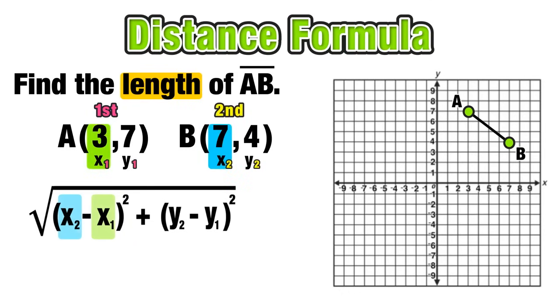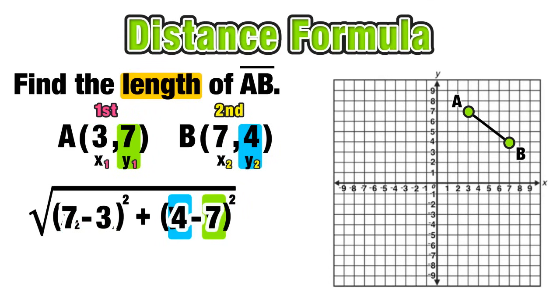Let's start off by looking at x1 and x2. x2 is 7, x1 is 3, so we have 7 minus 3 in parentheses on the left side of the equation. Now we can slide that over and look at y2 and y1. y2 is 4, y1 is 7, so we have 4 minus 7 in the parentheses on the right side of the distance formula equation.